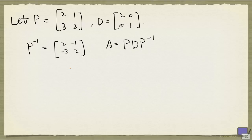Now how does that help us? So let's look at A squared. So A squared is P times D times P inverse times P times D times P inverse again. Right? So this is A and this is A.